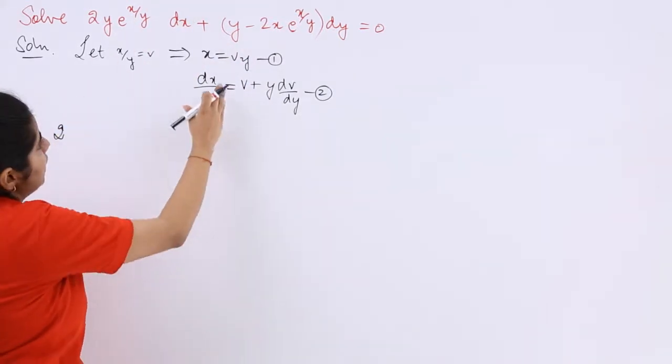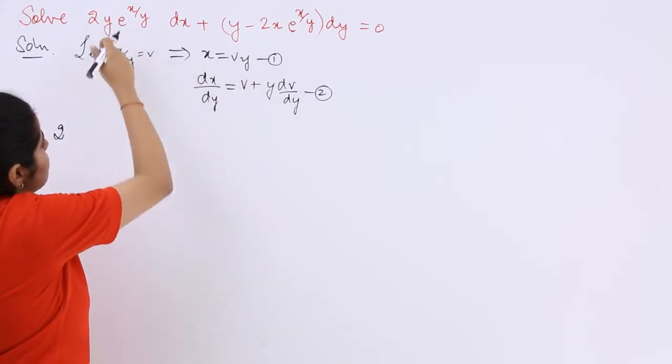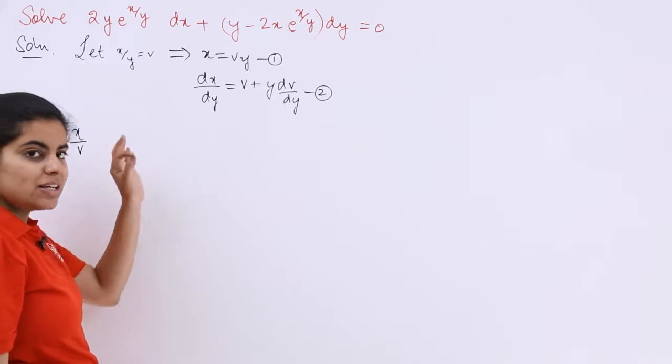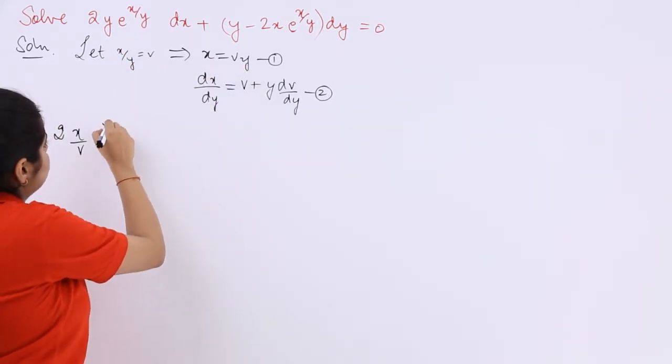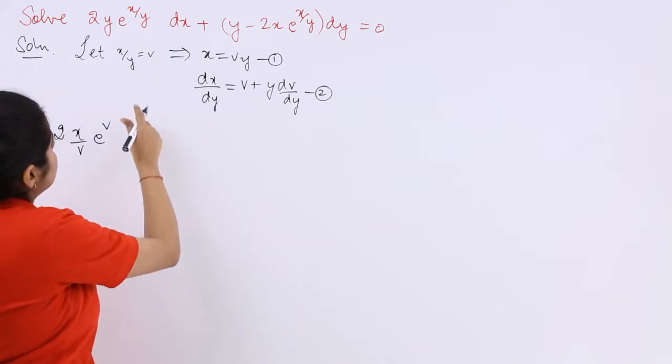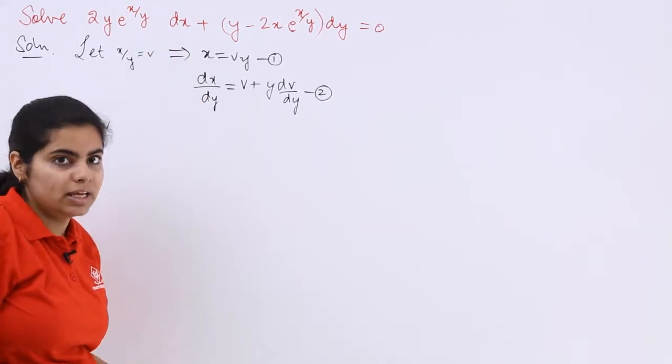Let's put in the question. So it becomes 2. Then what is your y? Your y is what? Your y is x upon v. Whatever is there, just simply write it down. e raised to the power x upon y is v. Then dx is there and everything is there. Okay, first let me do something else.